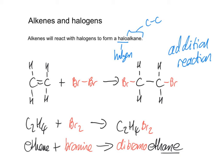Now, in terms of naming this, this then becomes dibromo. So two bromines and then ethane because we've got the two carbon atoms with the single bond. If I was reacting ethene and chlorine, for example, that would then become dichloroethane.